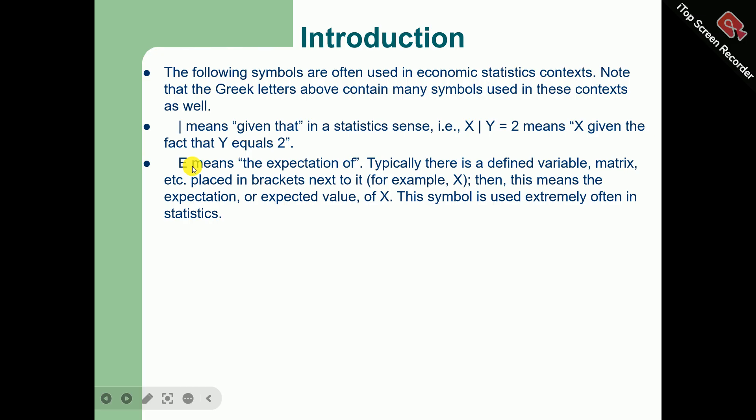This E means the expectation of. Typically, this is defined in a matrix placed in brackets next to it. For example, E(X) means the expected value of X. This symbol is used extremely often in statistics. So this capital E is used for the expected value or the expectation of.